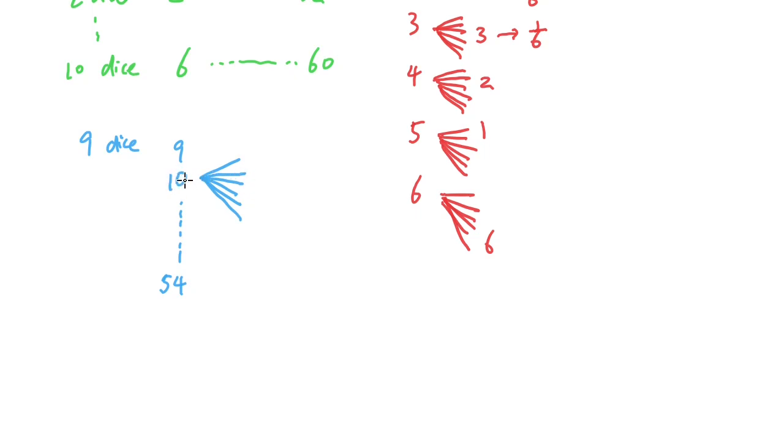So in this case, let's say you have 10 from the previous 9 dice. Then if you roll a 2 here, you are going to get a sum of 12, which is divisible by 6. And that happens at 1/6 probability.